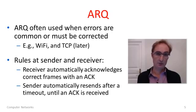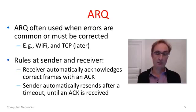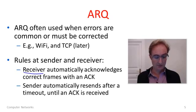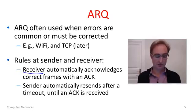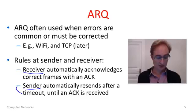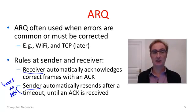ARQ is used in Wi-Fi and we'll also see it in TCP. It's used where errors are expected or common enough that they need to be corrected — in Wi-Fi because it's wireless and there's a lot of loss, and in TCP because packets might be lost in the network due to congestion. The rules for ARQ are fairly simple. At the receiver, you automatically acknowledge correct frames by sending a short packet called an ACK back to the sender. The sender automatically resends the frame if no ACK is received after a certain time period — this is called a timeout.